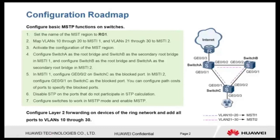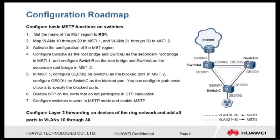You can configure path costs of ports to specify the blocked ports. Step 6: Disable STP on the ports that do not participate in STP calculation. Step 7: Configure switches to work in MSTP mode and enable MSTP. Configure layer 2 forwarding on devices of the ring network, and add all ports to VLANs 10 through 30.